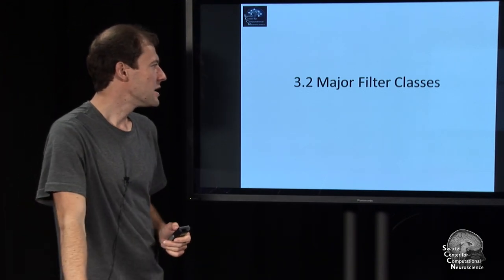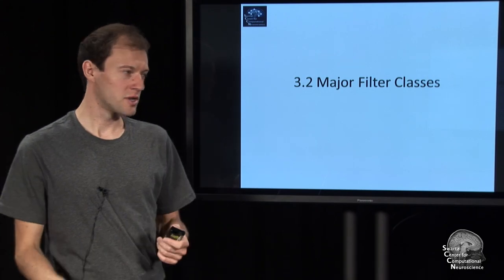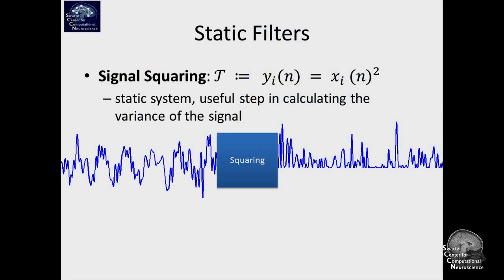The next module is on major types of filters in the context of brain-computer interfaces. The first and simplest one are so-called static filters.